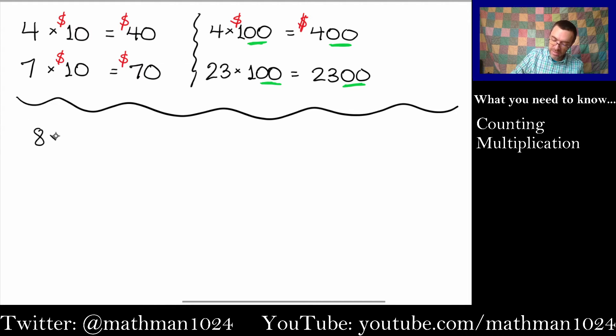If I were to take 8 times 1,000, we count the fact that we have 3 zeros here. So we end up with 8 followed by 1, 2, 3 zeros. Easy as that.